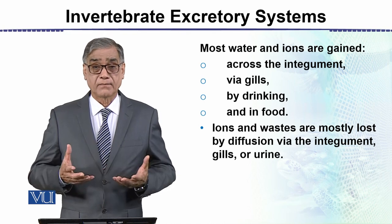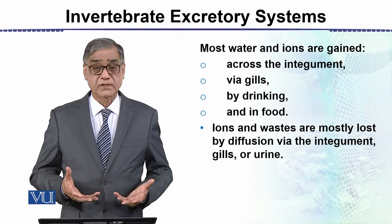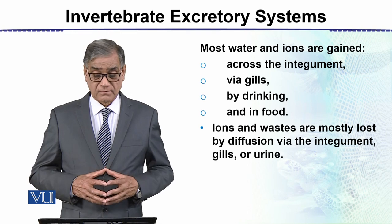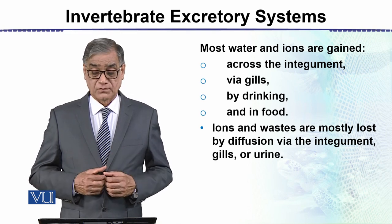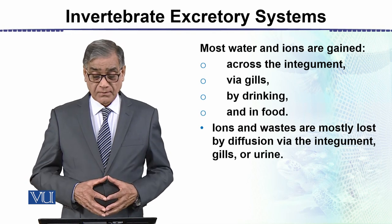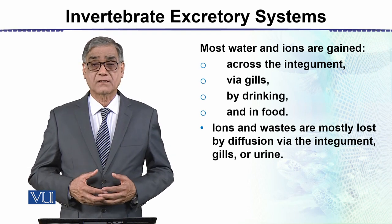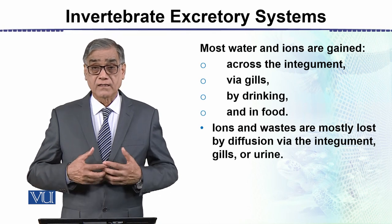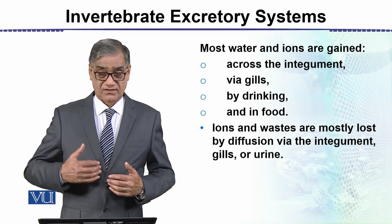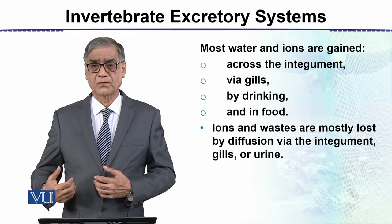Water and ion gain may occur across the integument, via gills, or by drinking water and through blood. These are the structures through which water is gained. Ions and waste are lost through the integument, gills, or urine, which are the routes of removal. This regulation maintains the balance inside the cells.